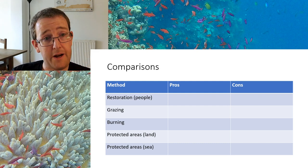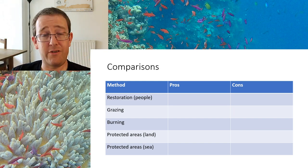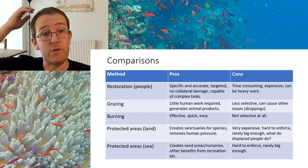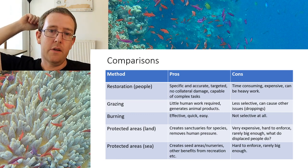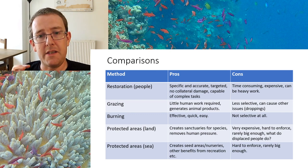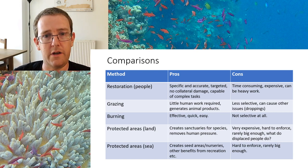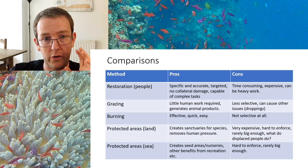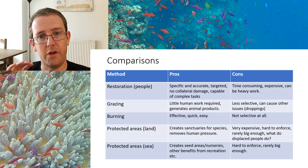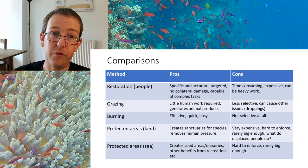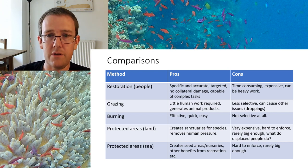The answers I'm going to show you are not categorical — you may have come up with different reasons in different contexts. The good thing about physical restoration using people power is that people can be specific and accurate: they can plant trees, pull out certain organisms, follow specific instructions, and carry out complex tasks. You don't get collateral damage — a human can tell the difference between species. Disadvantages: it's time-consuming, people's time is a valuable resource, it's expensive, and the work can be extremely heavy.